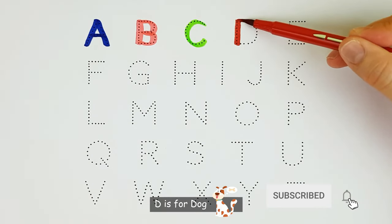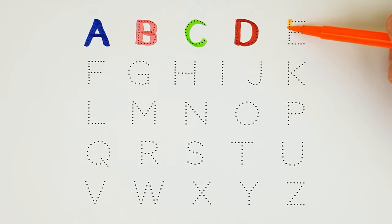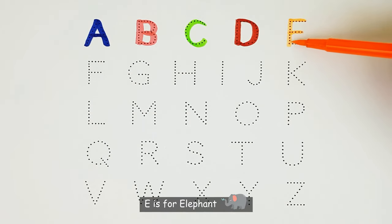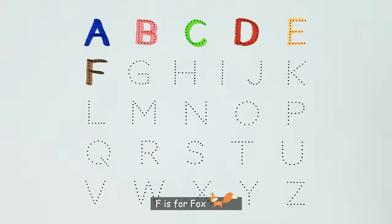D. D is for Dog. D. E. E is for Elephant. E. F. F is for Fox. F.